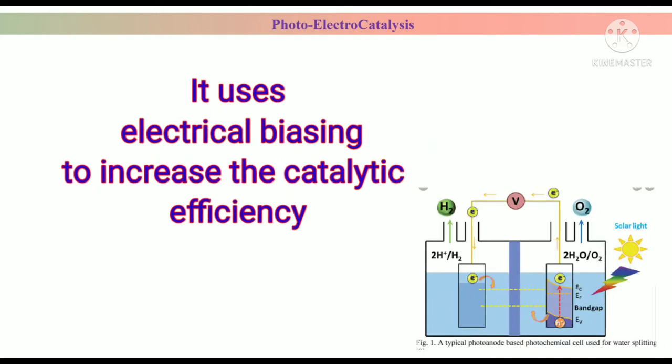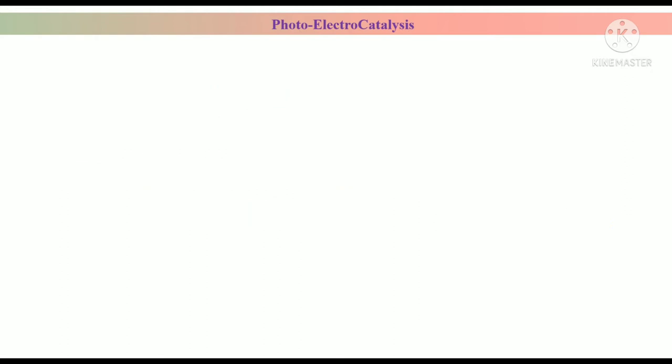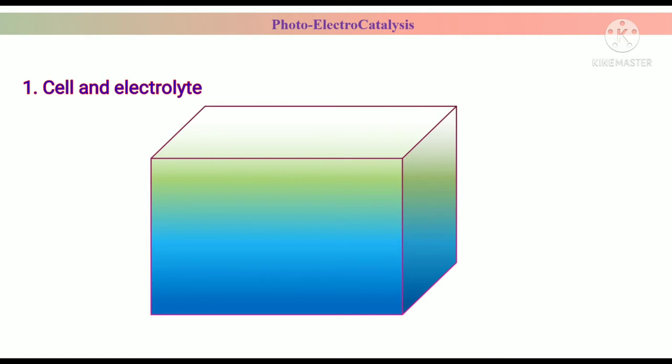Now come to the components and working of a PEC cell. Generally, a Photoelectrocatalysis cell consists of a cell filled with electrolyte and two electrodes immersed in it.